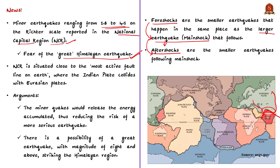There are arguments and counter-arguments regarding this Great Himalayan earthquake. Some believe that the minor quakes currently happening would release the accumulated energy and therefore reduce the risk of a very big earthquake. Others believe that a great earthquake with a magnitude greater than 8 is going to strike near the Himalayan belt. In such a case, the National Capital Region — which is very close to this active Himalayan seismic belt — is under a very big threat.